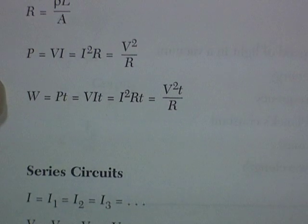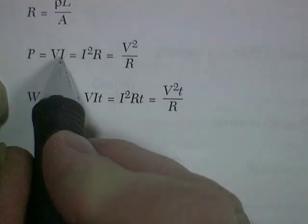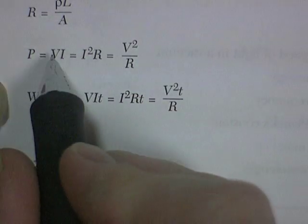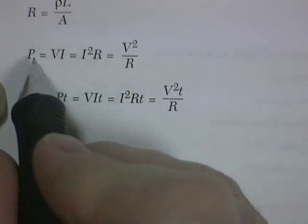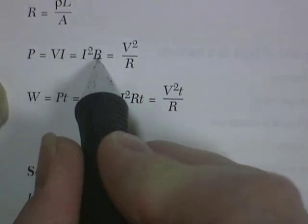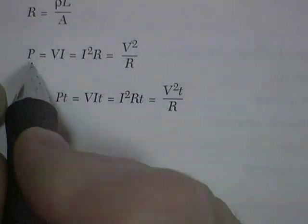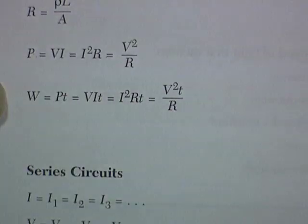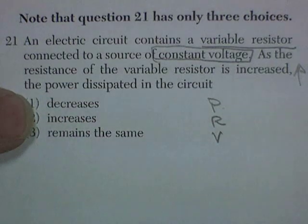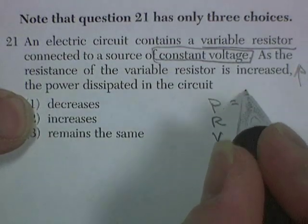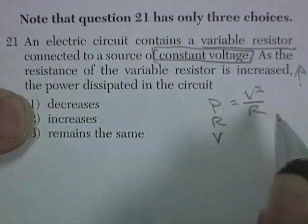So we go to the equations for power. Power is equal to voltage times current. Voltage can be written as current times resistance, so we can say power is equal to current squared R, or power equals V squared over R. We've got voltage, we've got resistance, we're looking for power, we're going to use that variation.